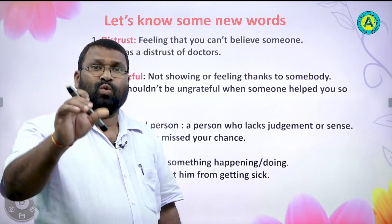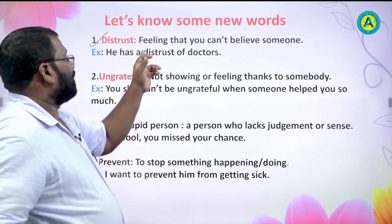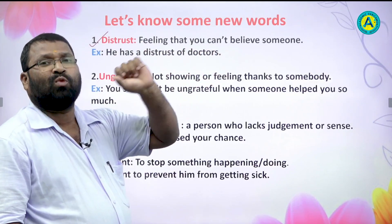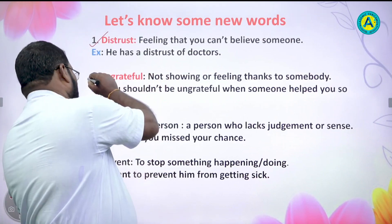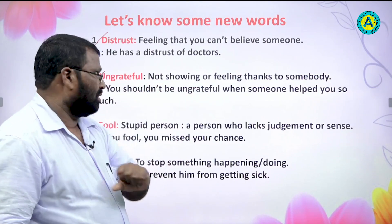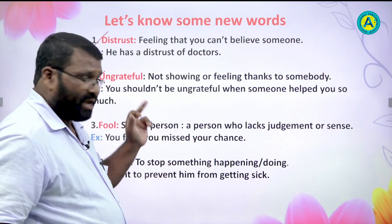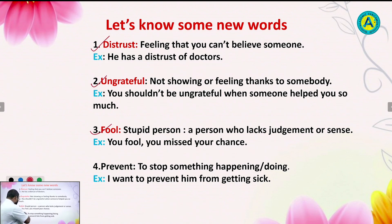Children, let us know some new words. First one is distrust. Distrust means feeling that you cannot believe someone. Example: 'He has a distrust of doctors.' Second one is ungrateful. Ungrateful means not showing or feeling thanks to anybody else. You should not be ungrateful when someone helps you. Next one is fool. Fool means a stupid person, a person who lacks judgment or sense. Example: 'You fool, you missed your chance.' Next one is prevent. Prevent means to stop something from happening. Example: 'I want to prevent him from getting sick.'